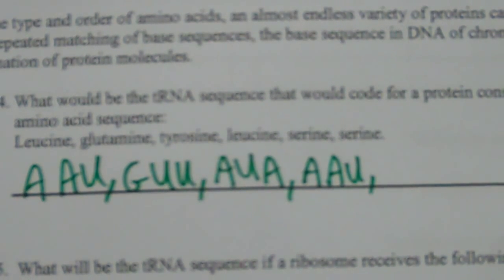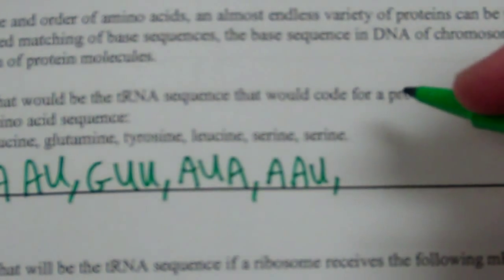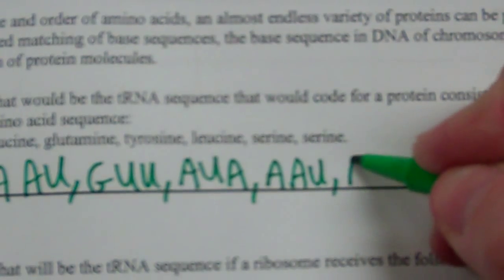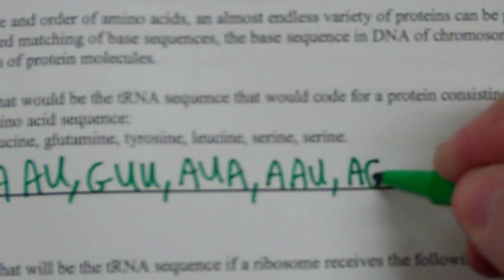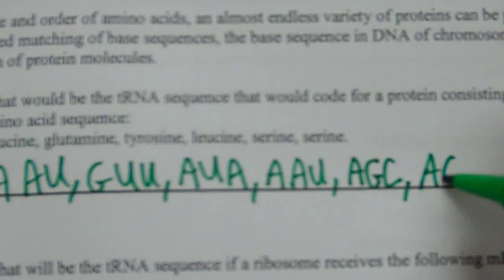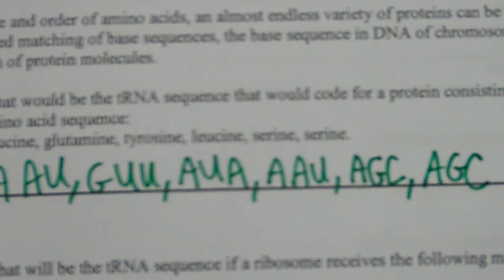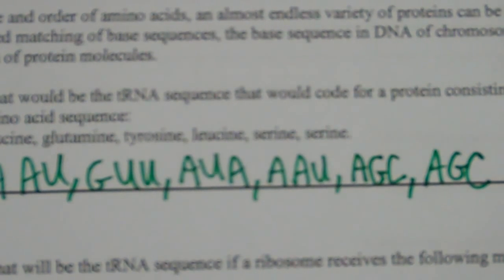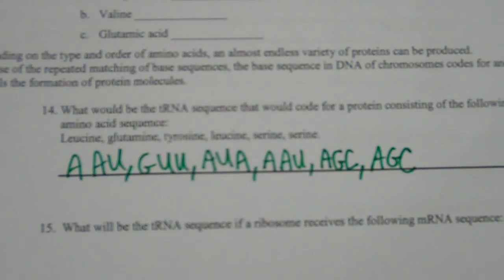And you look up serine — serine appears twice in a row. Why twice in a row? Well, that's just the code; that's just the sequence of amino acids for this protein. So that would be your answer, and I think that's actually pretty easy to understand. All you have to do is look at the table.